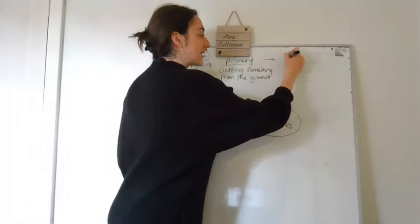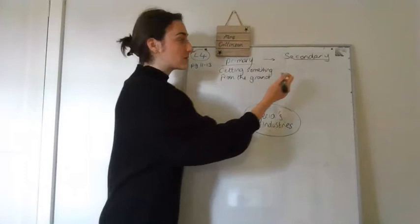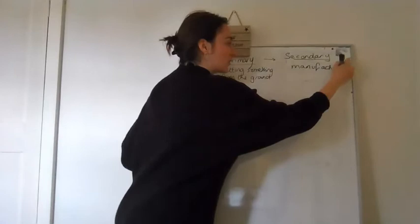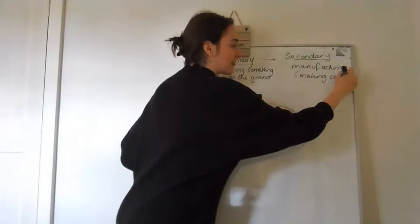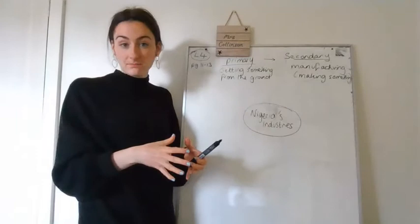Then you've got secondary. Secondary is slightly better paid. You need some skills and it's essentially making something out of what was taken in the ground. So we call that manufacturing. So making things, making something. So that could be working in a factory, it could be making and building a car. It's not the designing, it's the literal physical building and making of something.